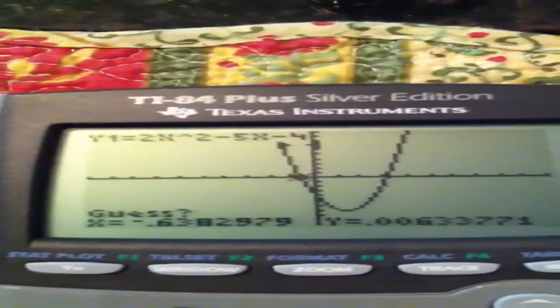Now it wants the right bound. So again, I use my arrow keys, and I move the dead bug to the right of that zero, to the right of that imaginary vertical line, and hit enter. And now it wants guess. So I move my spider on the zero, and I hit enter.